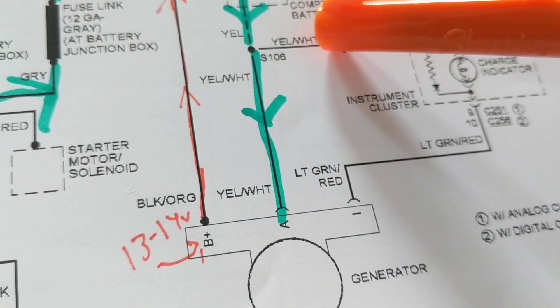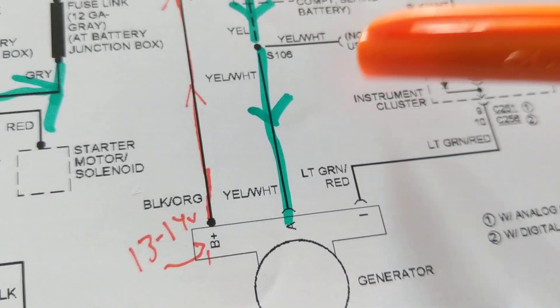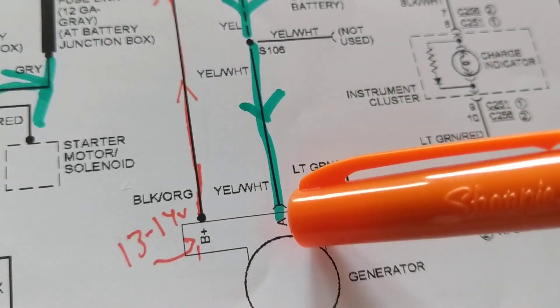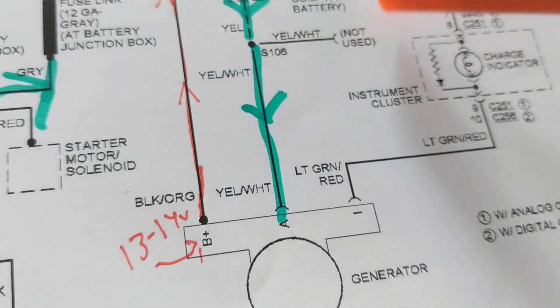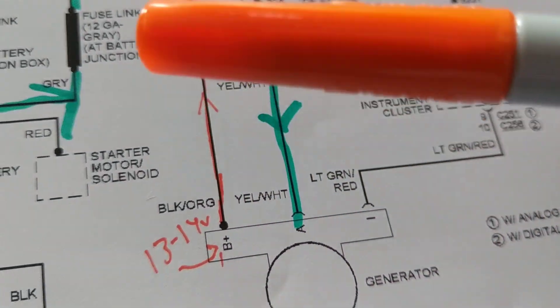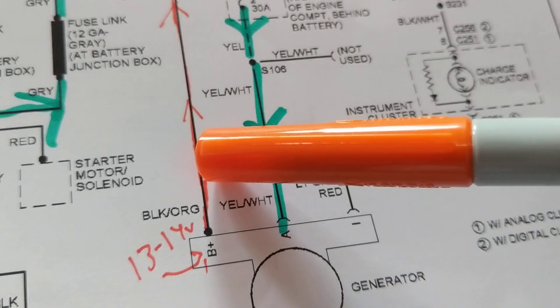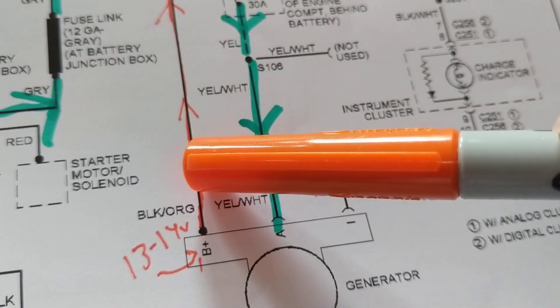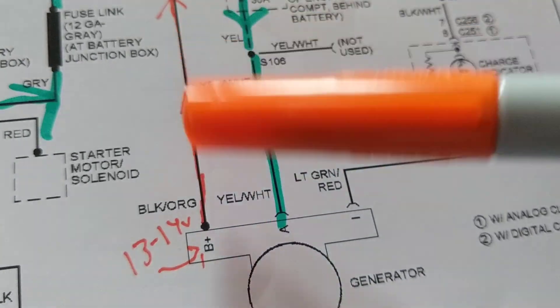That tells me the computer gave the command, the rotor and the stator is creating the magnetic field to create more current. That tells me all of this is working. By seeing a pulse from the computer doesn't tell me anything. It just tells me that the wire is good and the computer is good. What about the alternator? That's why I stress the point: put a clamp meter out here, make sure you get the current changing when you put accessories on.